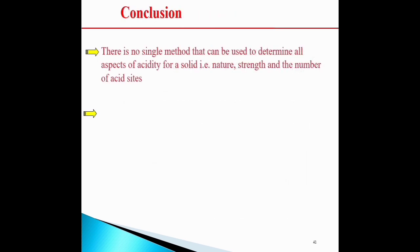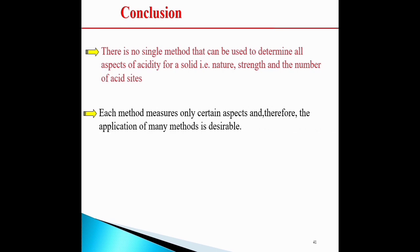In conclusion, there is no single method that can be used to determine all aspects of acidity for solid catalysts — including acid strength and number of acid sites. Each method measures only certain aspects, and therefore the application of many complementary methods is desirable.